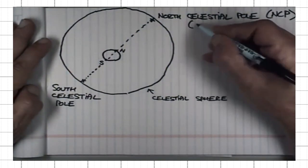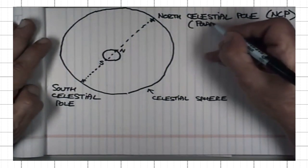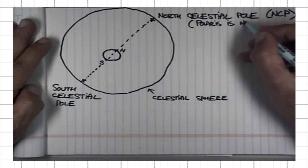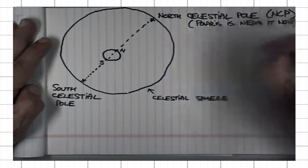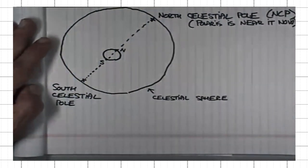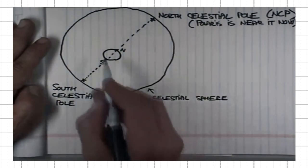As I mentioned before, Polaris is near it now. And no star close to the south celestial pole. These are the two important points on celestial sphere.